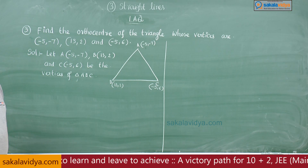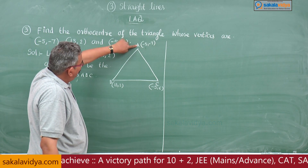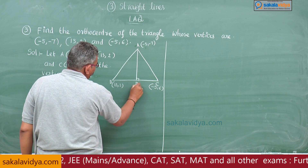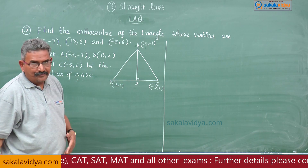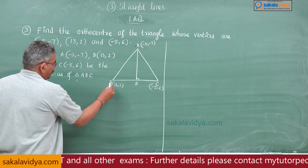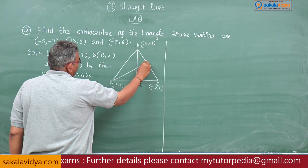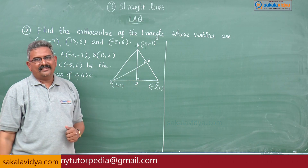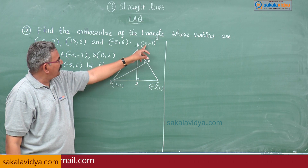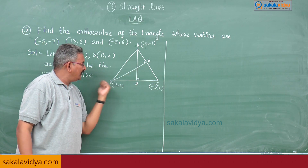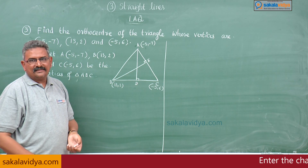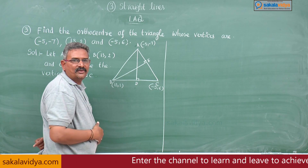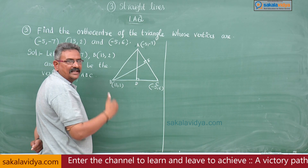First, draw the altitude. The altitude means from vertex A to the opposite side BC, we draw the perpendicular. This is known as one of the altitudes — AD is the altitude drawn from A to BC. Similarly, another altitude BE can be drawn from B. To find the equation of AD, we need the slope of BC. Slope of BC equals y2 minus y1 over x2 minus x1, which is 6 minus 2 over minus 5 minus 13, giving 4 over minus 18, which simplifies to minus 2 by 9.